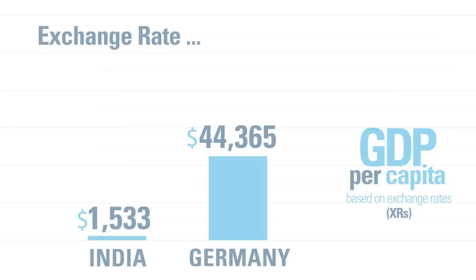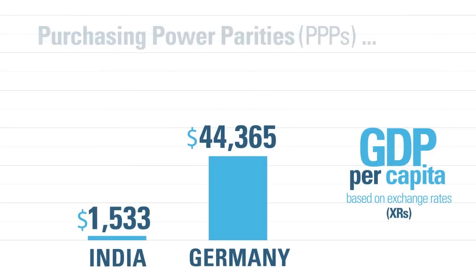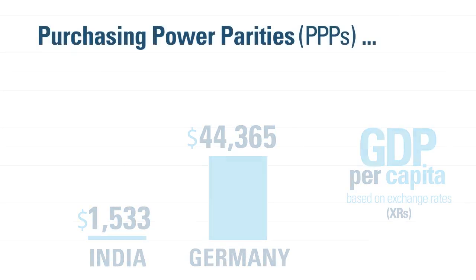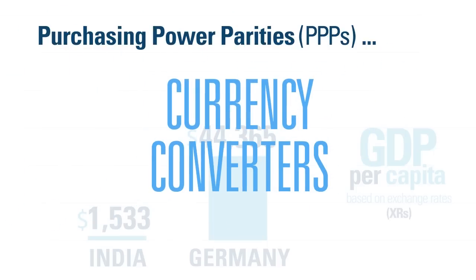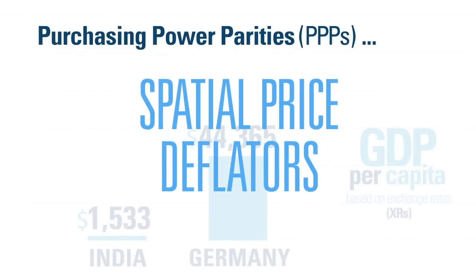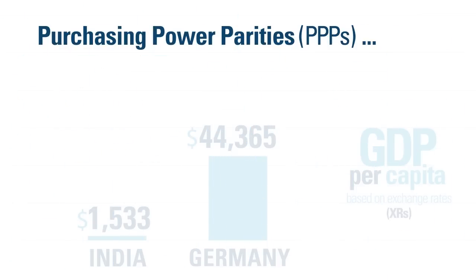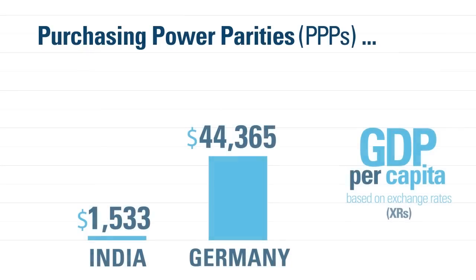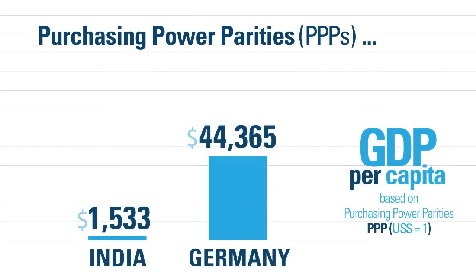To compare the real size of world economies, purchasing power parities are the better measure because they're both currency converters and spatial price deflators. In other words, they're conversion rates that both convert to a common currency and equalize the purchasing power of different currencies.